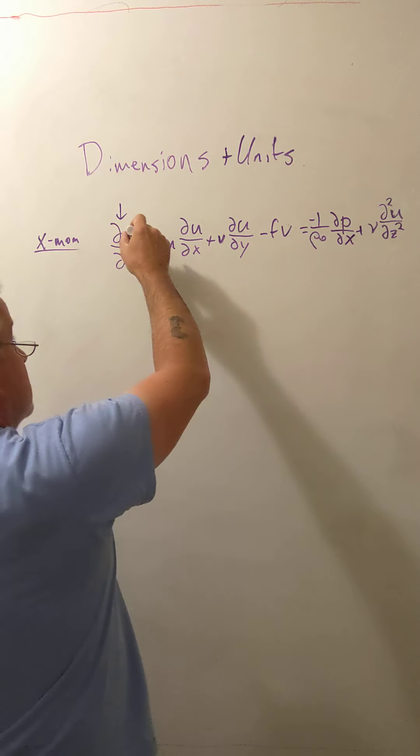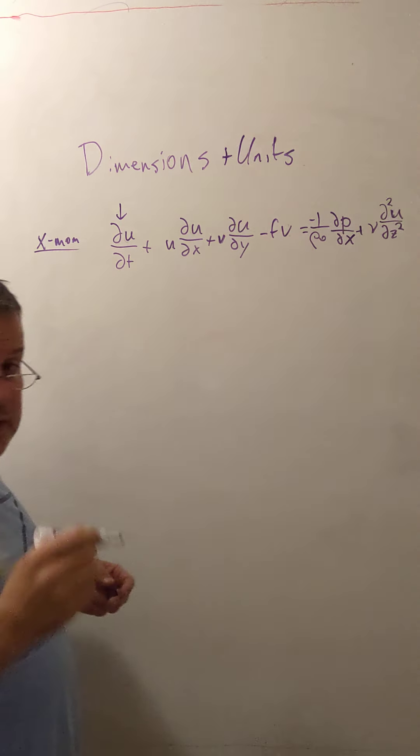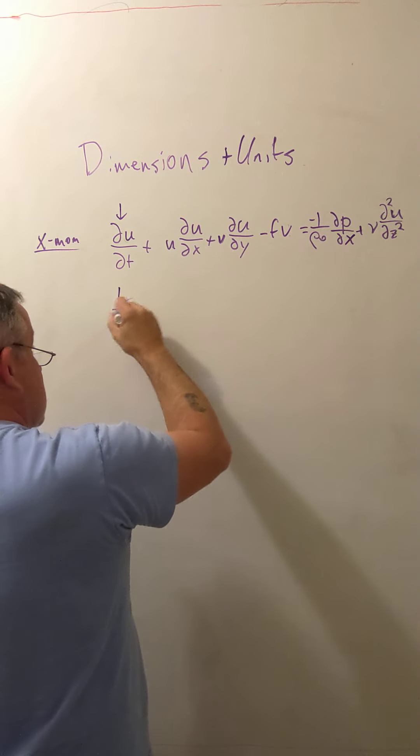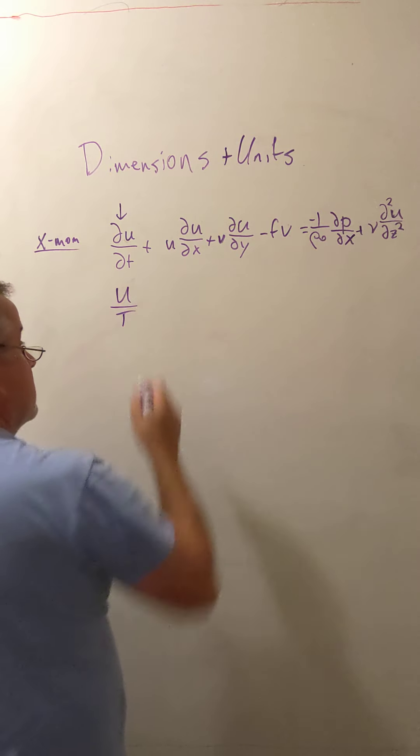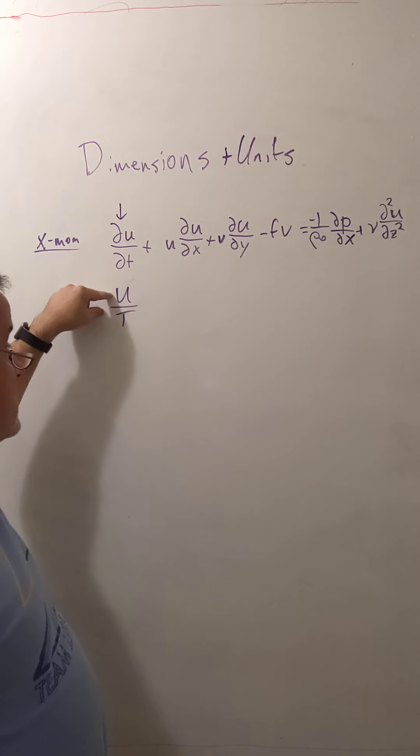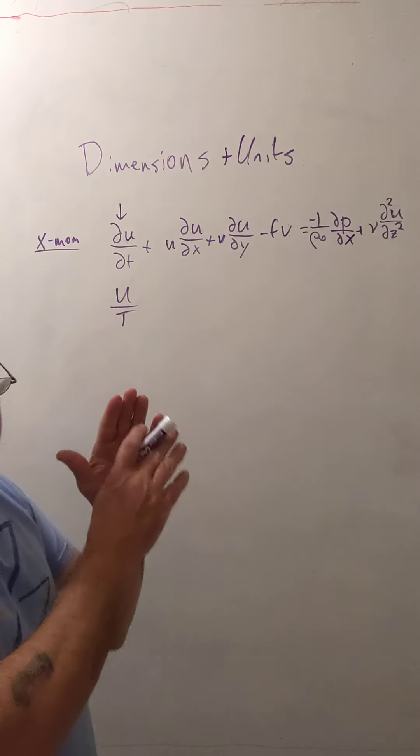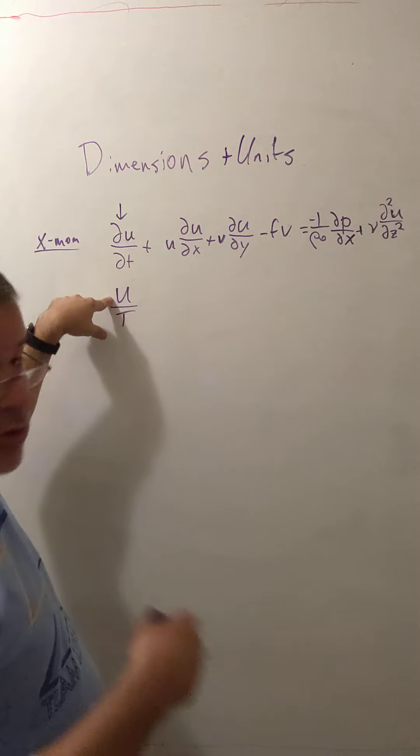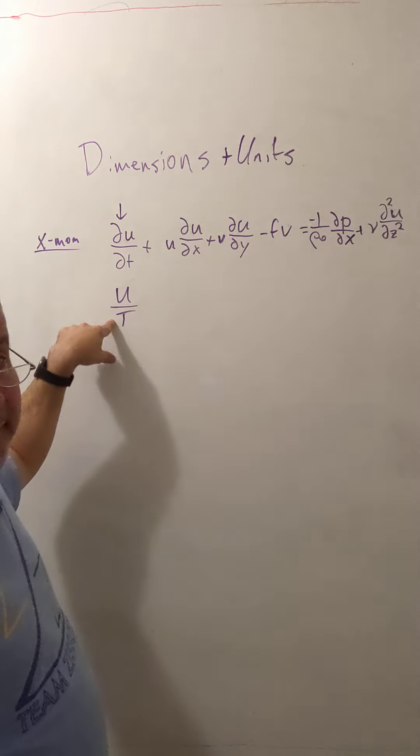Okay, so a velocity has the dimensions of length per unit time, and the derivative of the velocity with respect to time has the units of length per unit time squared. It's an acceleration, so we could either say this was length over time squared, or we might prefer to say that it was just a typical velocity divided by a typical time scale. Now, we don't know what this velocity is going to be, but this is the velocity that has to do with the rate of change in this acceleration term. This is the time that has to do with the amount of time over which we have to pay attention.